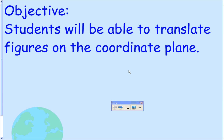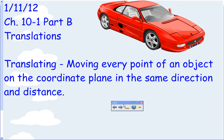The objective for this lesson is that you'll be able to translate figures on the coordinate plane. Translate just means to move things up, down, left, or right — so we're going to have shapes or points on the coordinate plane and move them. These notes were given in class on January 11th, from chapter 10-1 part B in your textbook. The topic is translations.